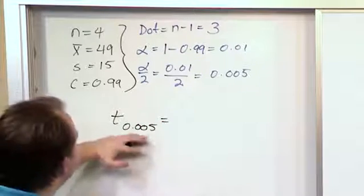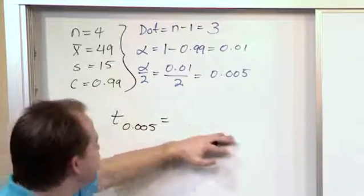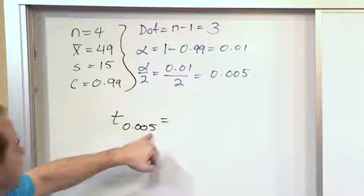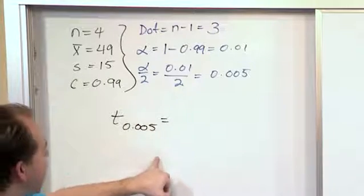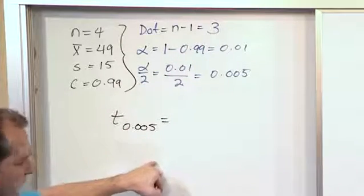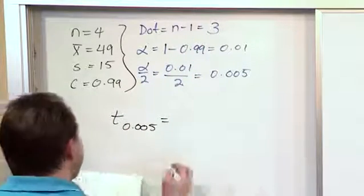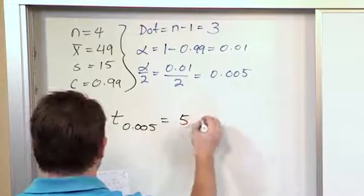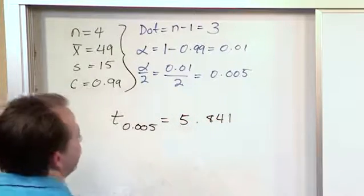So what we do is we look across in the column headings of our t distribution for 0.005. When we find that column, we go down. Now, there's only three degrees of freedom in this problem, so we don't have to go down very far for three degrees of freedom. And what we find is we get 5.841.